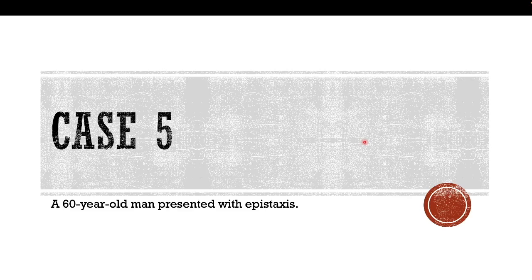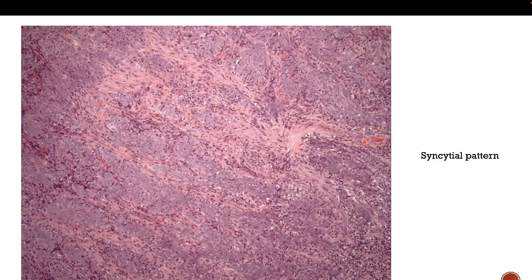Moving on to our next case: a 60-year-old man presented with epistaxis. On examination there is a mass at the fossa of Rosenmüller, and a biopsy shows the mass composed of tumor arranged in a syncytial pattern. The normal architecture of the cell is no longer preserved — no proper lining, no proper stroma, and the vascular spaces are not arranged properly. The cells are arranged in a syncytial pattern.